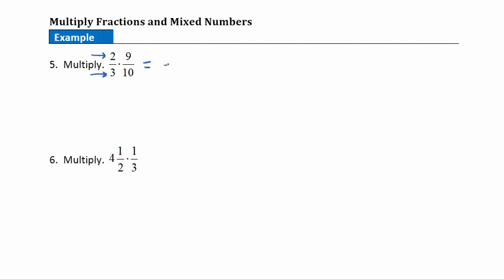I'm going to draw one big fraction bar, and go across the top to factor. 2 is prime, so I'll write that as 2. 9 factors into 3 times 3. Going across the denominators: 3 is prime. 10 factors into 2 times 5. Once factored, I can look to divide out any common factors. We have a common factor of 2 and a common factor of 3. In the numerator I have 1 times 1 times 3, which is 3. In the denominator, 1 times 1 times 5, which is 5. So we go straight to our simplified form: 3/5.